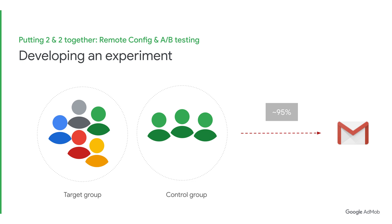Once your results reach a desired confidence level, you can decide what you would like to do with the experiment. If one of the experiment variants is outperforming the control, you can decide to roll it out as the new control in the Firebase console. If the confidence level of the experiment results reaches 95% or greater, you'll also receive an email indicating that there is a likely winner in your experiment. At any point, you can choose whether or not to terminate the experiment, but if the confidence level isn't high enough yet, you'll probably want to wait to gather more data.